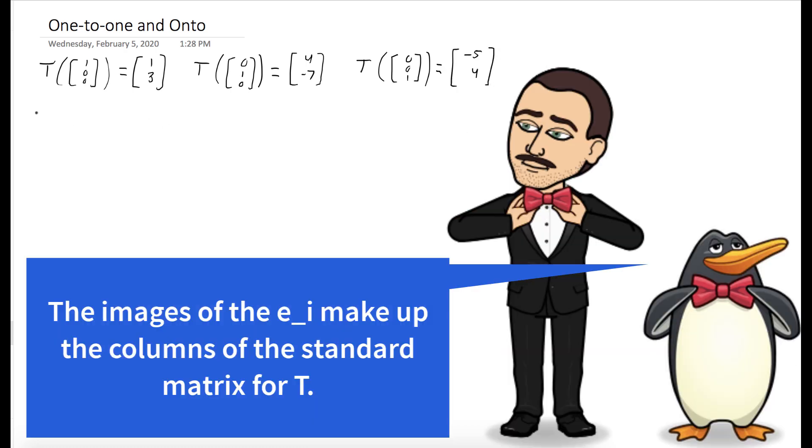And our theorem says that the standard matrix is just the matrix whose columns are [1, 3], [4, -7], and [-5, 4].